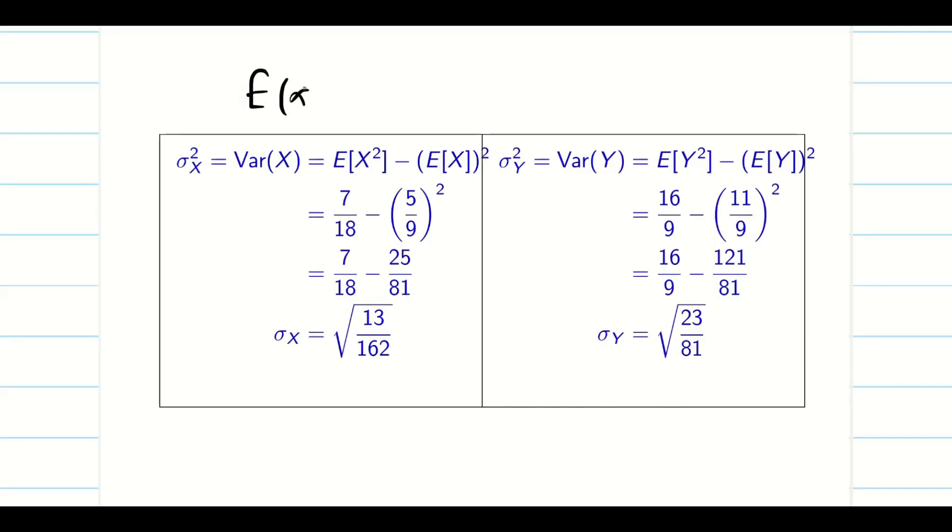Up to now we found E(X), E(X²), E(Y), E(Y²), sigma x, sigma y. Now we remember the formula. The covariance of x, y is going to be E(XY) minus E(X)*E(Y).